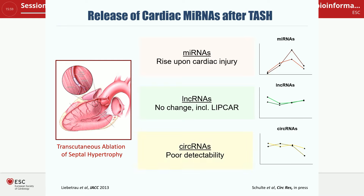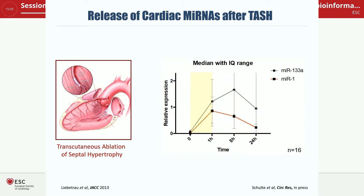Circular RNAs — also supposed to be very promising because they're circles — we really struggled to detect them reliably. So even with this new RNA species, we still think that in our hands at least, the microRNAs perform better than these other RNA candidates. RNAs — microRNAs — are cytosolic, so you could envisage needing a less pronounced injury to release cytosolic components into the blood compared to myofilament proteins. In the first hour after induced injury, most microRNAs already peak — for example, microRNA-1 — and subsequently decline.